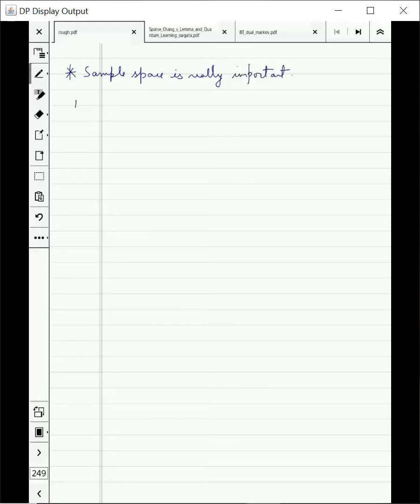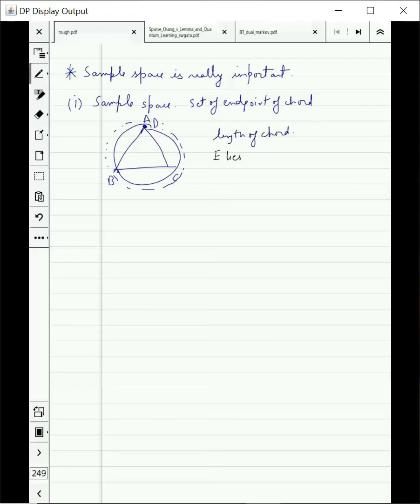In the first case, our sample space is the set of endpoints of the chord. One endpoint is fixed at A and we vary the other endpoint. This is D also and E keeps travelling around the circle. If this is the sample space, we see that the length of the chord is more than AB only if E lies between B and C. So this gives us the probability of 1/3.